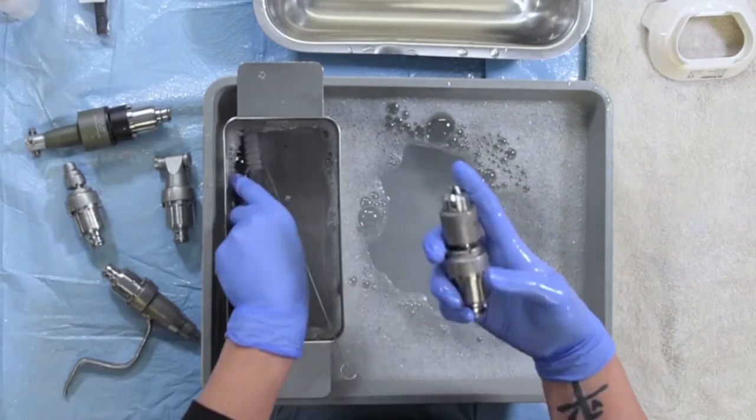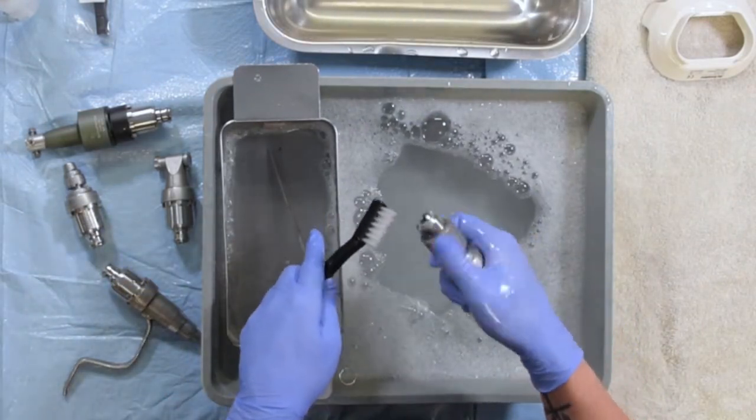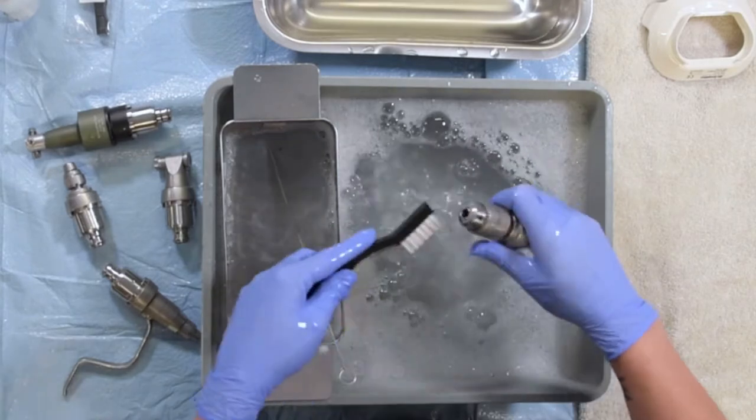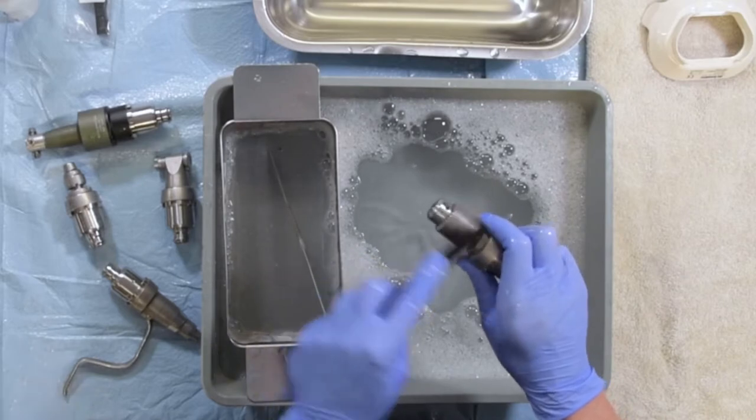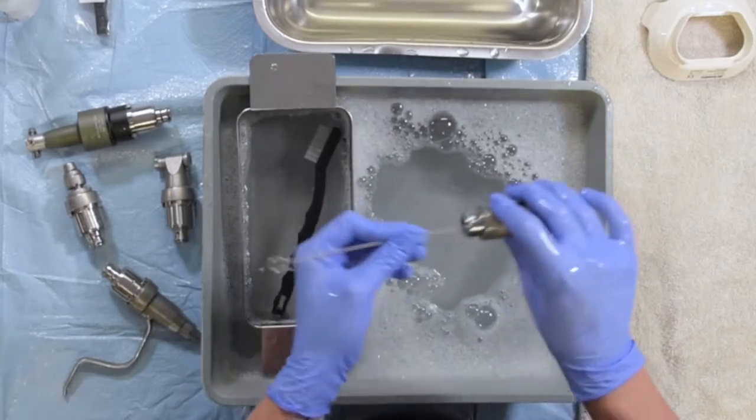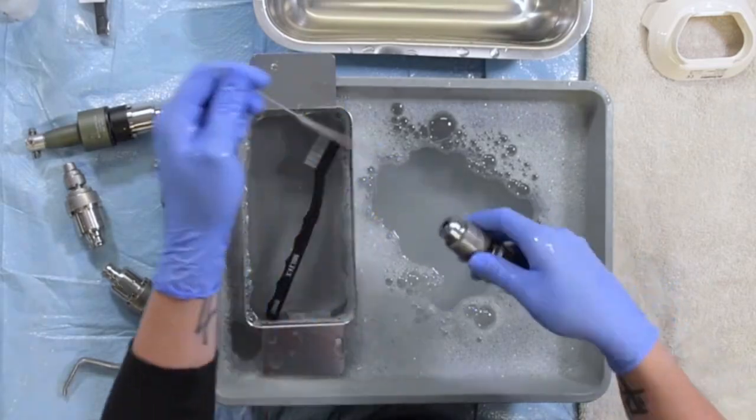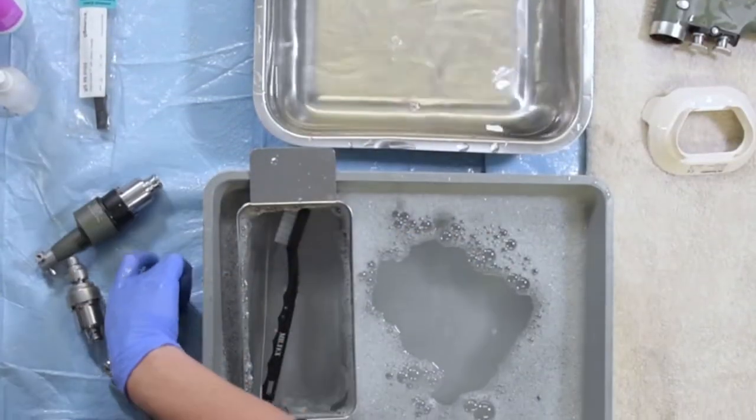Using the nylon brush, you'll repeat the process with each attachment, making sure to open and accentuate each of these attachments. Use your soft cannulated brush to clean inside of the attachments, and then rinse well with clean warm water.